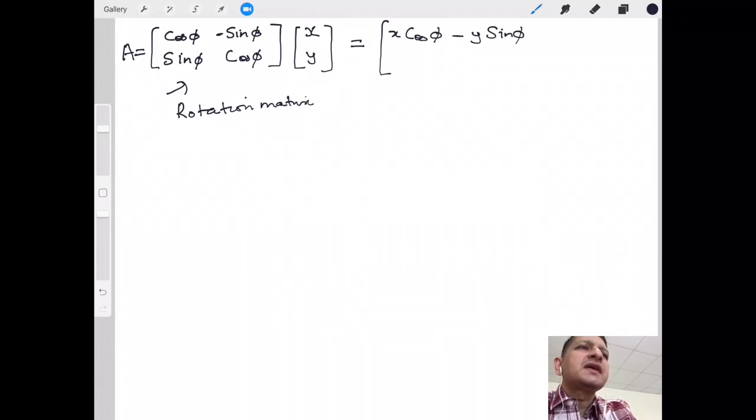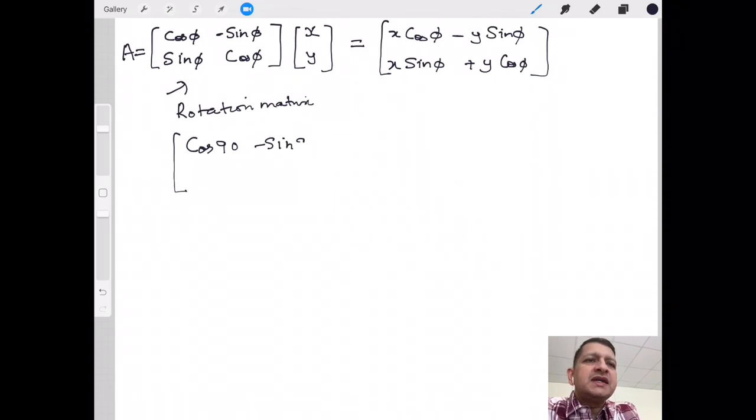And the other coordinate is x sin φ plus y cos φ. So let's see what exactly happens when you multiply x, y with this rotation matrix. For illustration, if I take φ as 90 degrees...